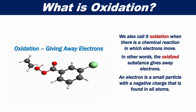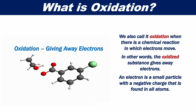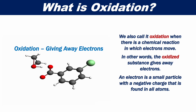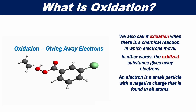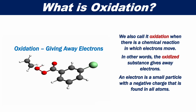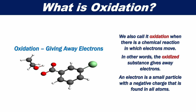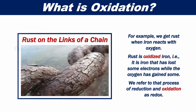We also call it oxidation when there is a chemical reaction in which electrons move. In other words, the oxidized substance gives away electrons. An electron is a small particle with a negative charge that is found in all atoms. For example, we get rust when iron reacts with oxygen — rust is oxidized iron that has lost some electrons while the oxygen has gained some.